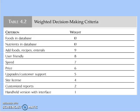The second specification, 'nutrients in database,' also has high priority and is assigned 10 out of 10. 'Add foods/recipes' is assigned 9, user friendliness 8, speed of the software 7, price 6, upgrades and customer support 5, site license 4, customized reports 2, and handheld version with interface has the lowest priority, assigned a weight of 1.